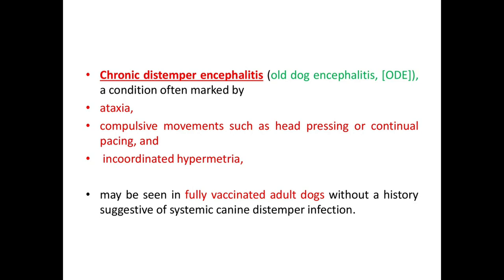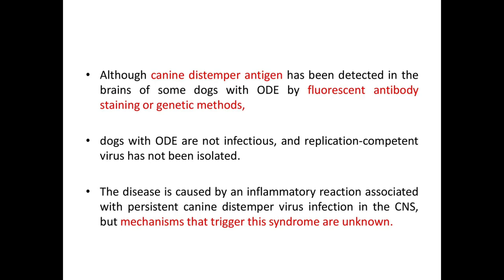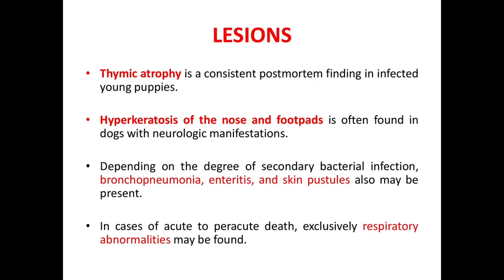Chronic distemper encephalitis, also known as old dog encephalitis (ODE), is a condition often marked by alexia, compulsive movements such as head pressing or continual pacing, and incoordinated hypermetria. ODE may be seen in a fully vaccinated adult dog without a history suggestive of systemic canine distemper infection. Although canine distemper antigen has been detected in dogs with ODE, dogs with ODE are not infectious and replication-competent virus has not been isolated. The disease is caused by an inflammatory reaction associated with persistent CDV infection in the CNS, but the mechanism that triggers this syndrome is unknown.